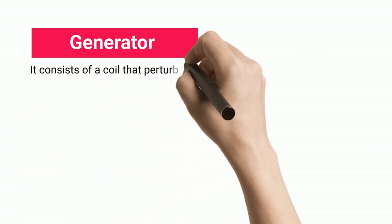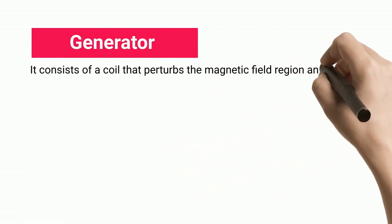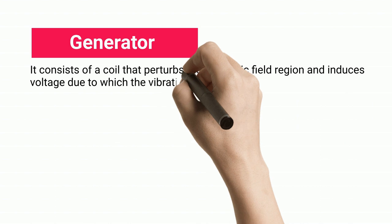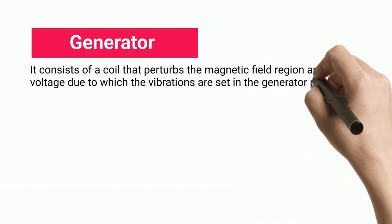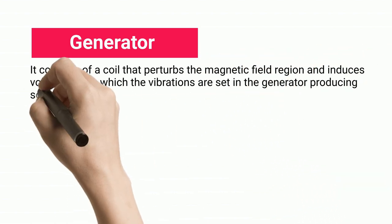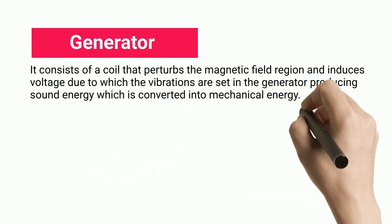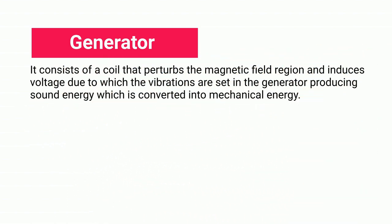Generator: A generator consists of a coil that perturbs the magnetic field region and induces voltage. This causes vibrations to be set in the generator, producing sound energy which is converted into mechanical energy.